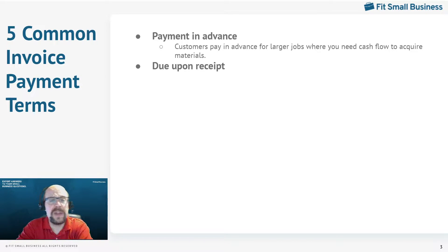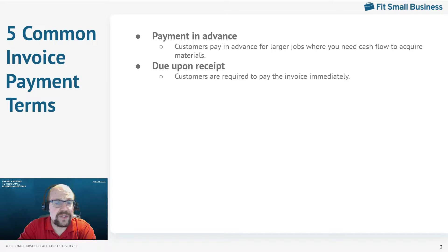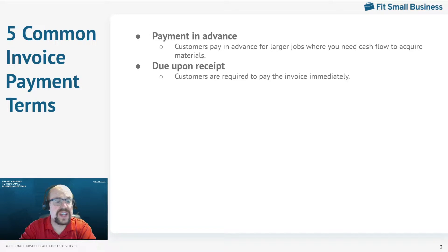A second common term is due upon receipt, where the customer is expected to pay the invoice immediately. In reality, due upon receipt does not work very well. The problem is that companies generally don't pay bills on a daily basis. They receive the invoice, put it into the approval process — that could take a few days — and then it'll sit there until they actually issue checks. So it's not necessarily realistic to expect a customer to pay a bill upon receipt.